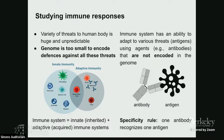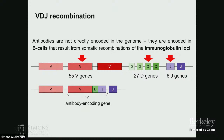In order to recognize a lot of different antigens, we need to develop a lot of different antibodies, and it is very hard to encode all of them in the genome directly. That is why they are the result of a special process. Antibodies are developed by B cells that have unique genomes in places called immunoglobulin loci.